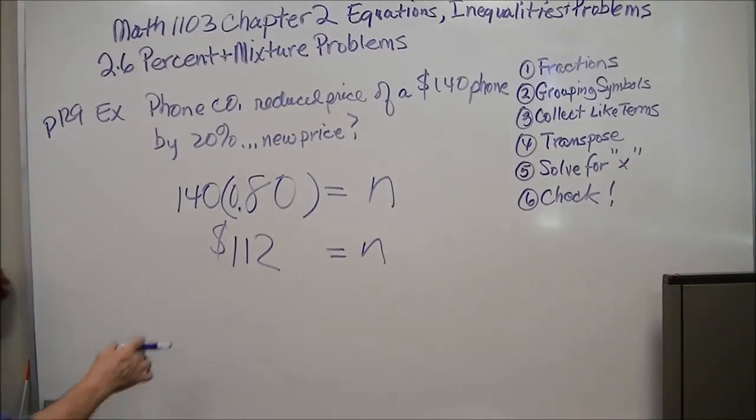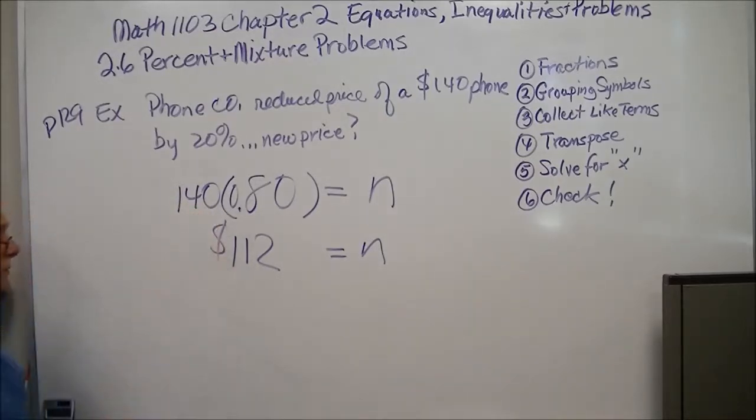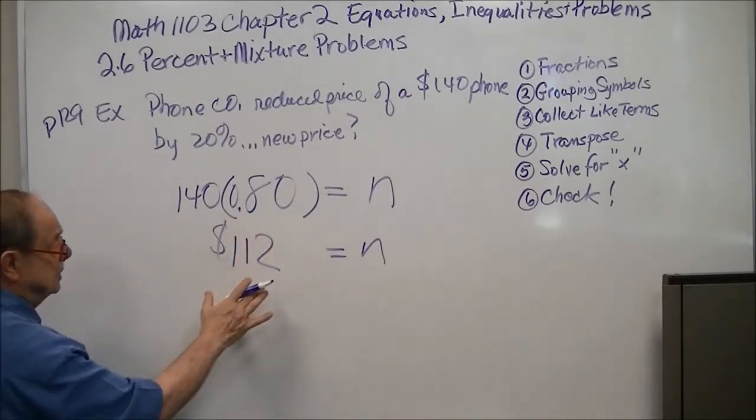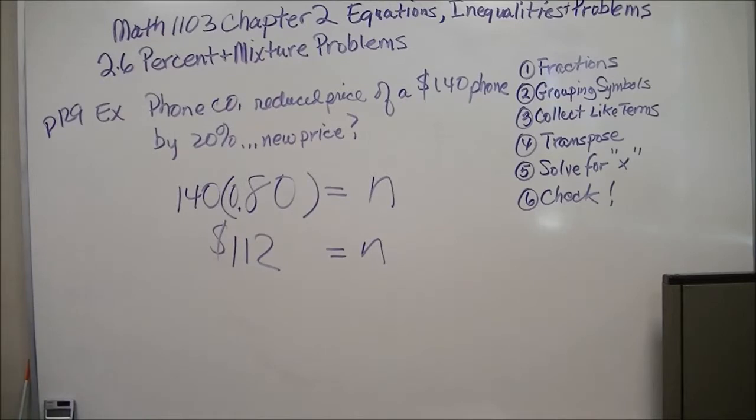Now if you did it the other way, took 20 percent of that, then subtracted that from the 140, you'd get the same amount. But here's a way to do it in one swoop, a little more challenging. But whatever way you decide, get the right answer, that's good.